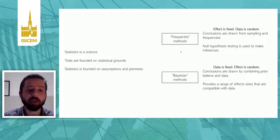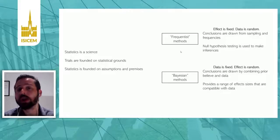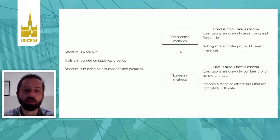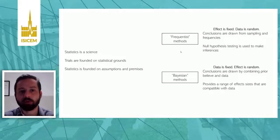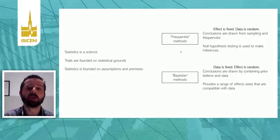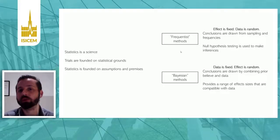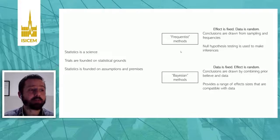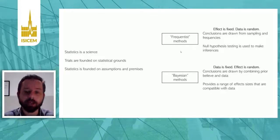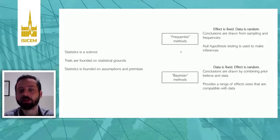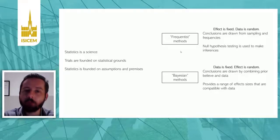Statistics and trials are founded on statistical grounds, and we have two schools that are more complementary than opposing. We have frequentist methods, which are what most people are introduced to — conclusions are drawn from sampling and frequency, and you check whether you can make inferences using null hypothesis settings. For Bayesian methods, it's quite the opposite: the data is fixed and the parameters are random, and you combine your prior beliefs with the data in the model to see what range of effect sizes are compatible with the data.